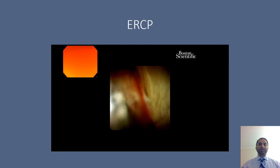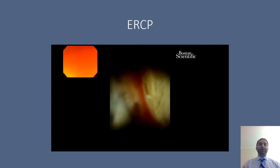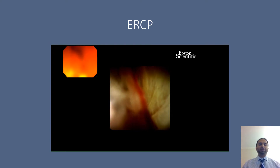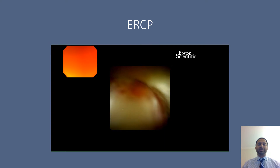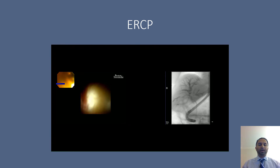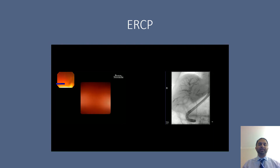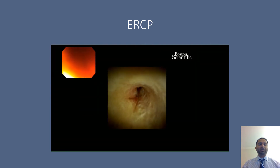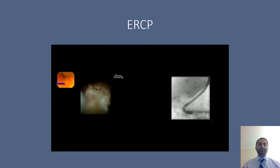This is cholangioscopy. Initially, you're seeing the distal bile duct. You can see normal-appearing biliary epithelium on the right-hand side of the screen. In the middle of the lumen of the bile duct, it looks like there's a blood clot or some abnormal tissue. When we infuse the bile duct with normal saline to get better visualization, we can see that it does appear to be a blood clot. When we are able to remove that blood clot, we do see the distal stricture.